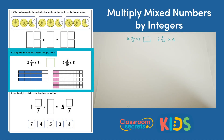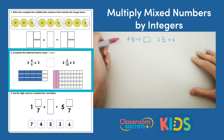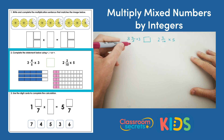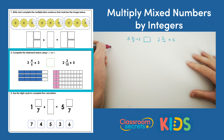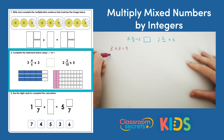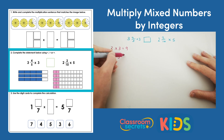Question 2: complete the statement below using more than, less than or equals. We are comparing 3 and 4 fifths times 3 with 2 and 2 tenths times 5. We need to solve these calculations in order to compare the answers. So for 3 and 4 fifths times 3, we can break this down into 3 times 3, which is 9, and 4 fifths times 3, which is 12 fifths.